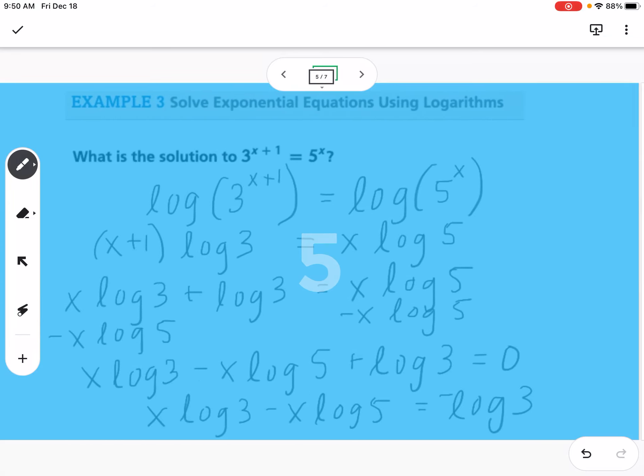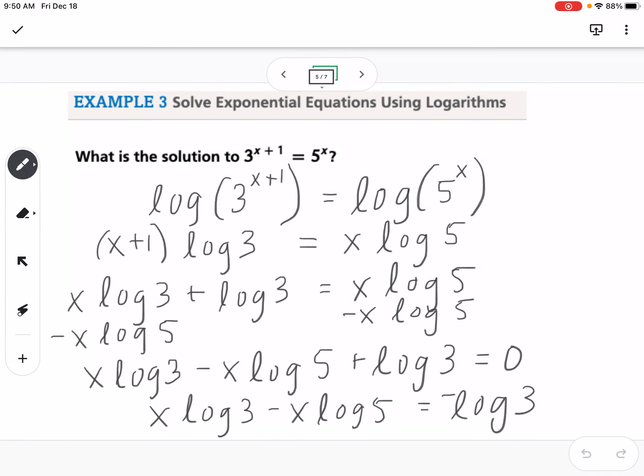That's kind of a long process, but taking the log of both sides, using the properties, and then getting your variables on one side, your non-variables on the other side, and then using the properties to simplify.